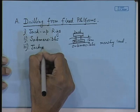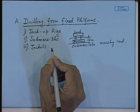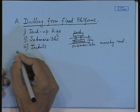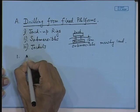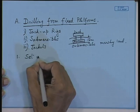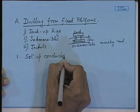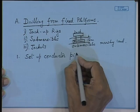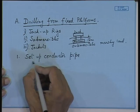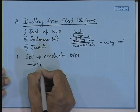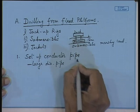Jackets are essentially guides for your piles and they are fixed coastal structures. The main purpose of drilling is to set up a conductor pipe. This is your prime motivation — it is a large-diameter pipe driven by a pile driver.